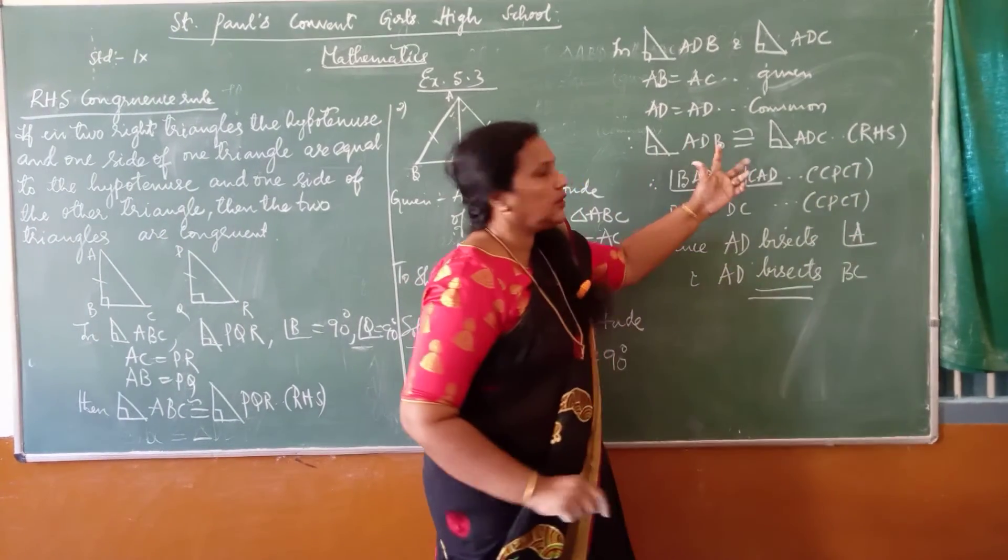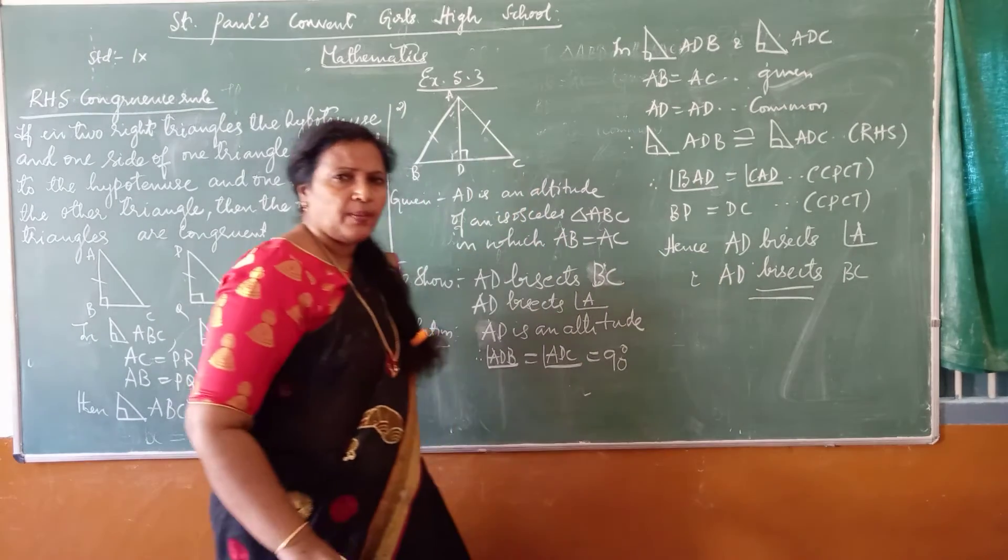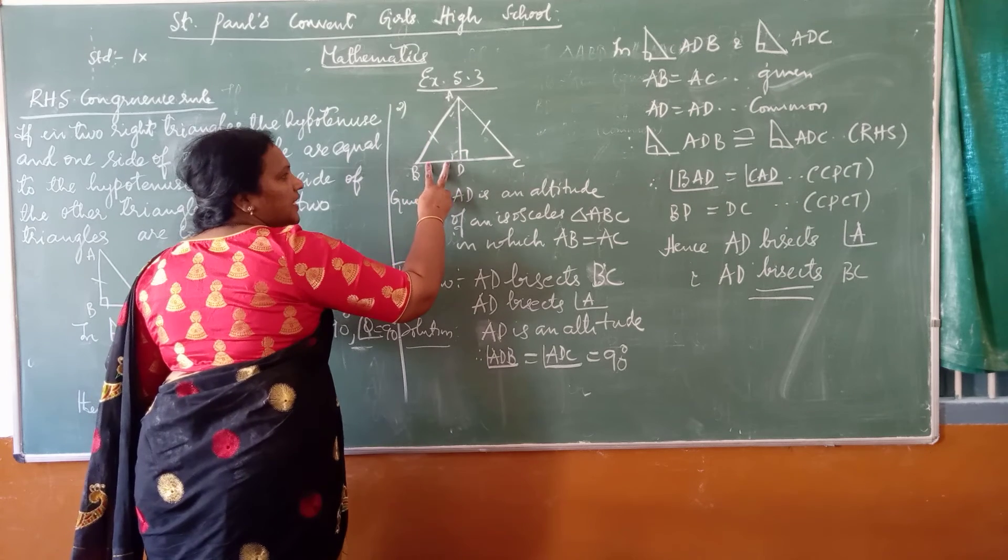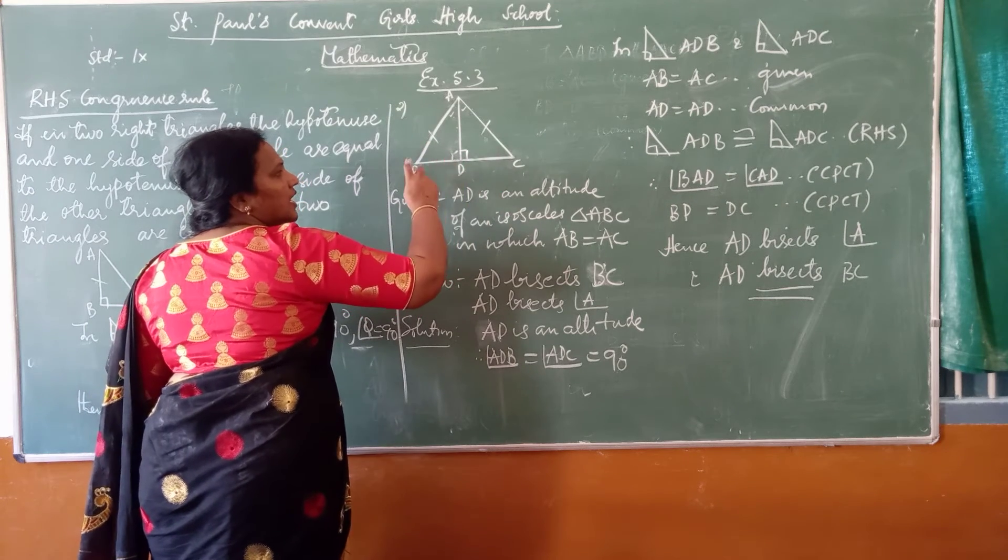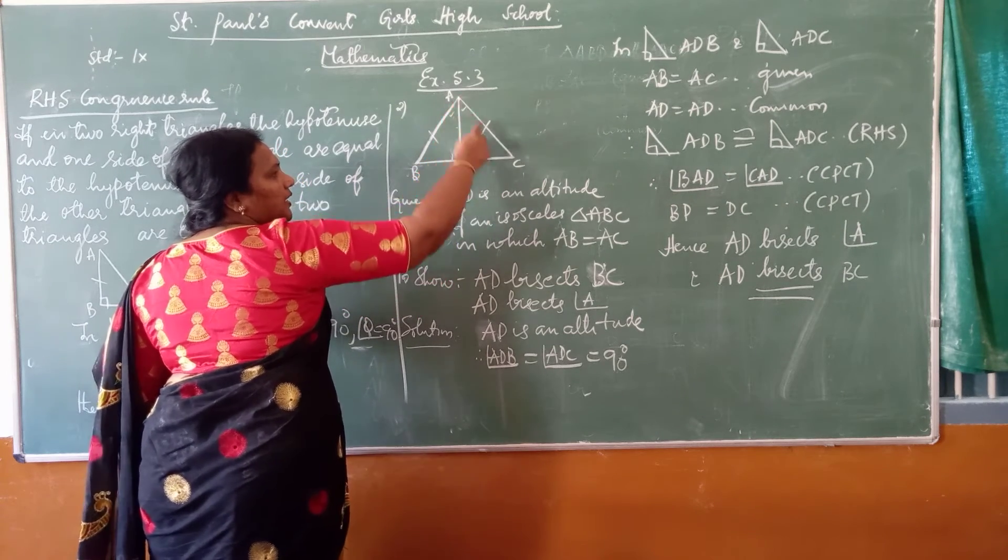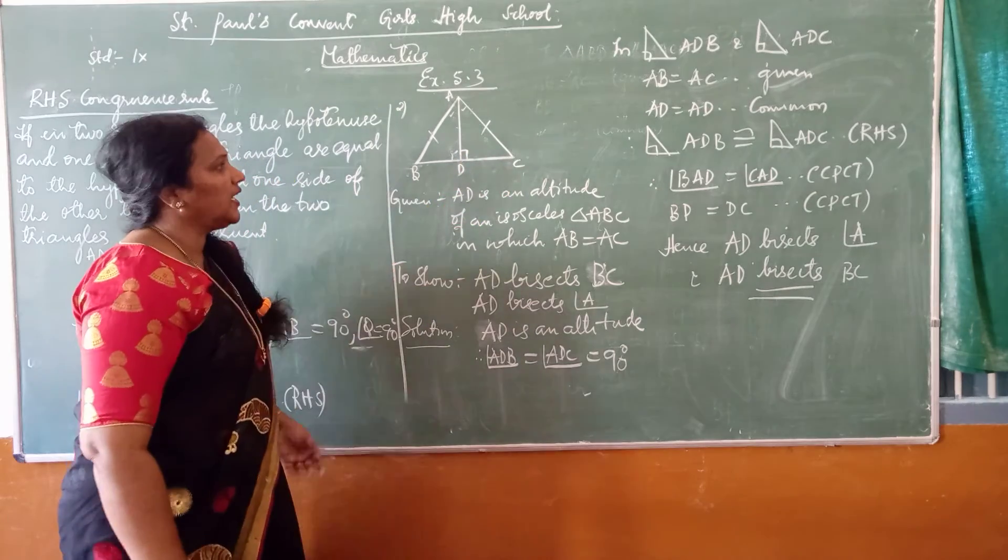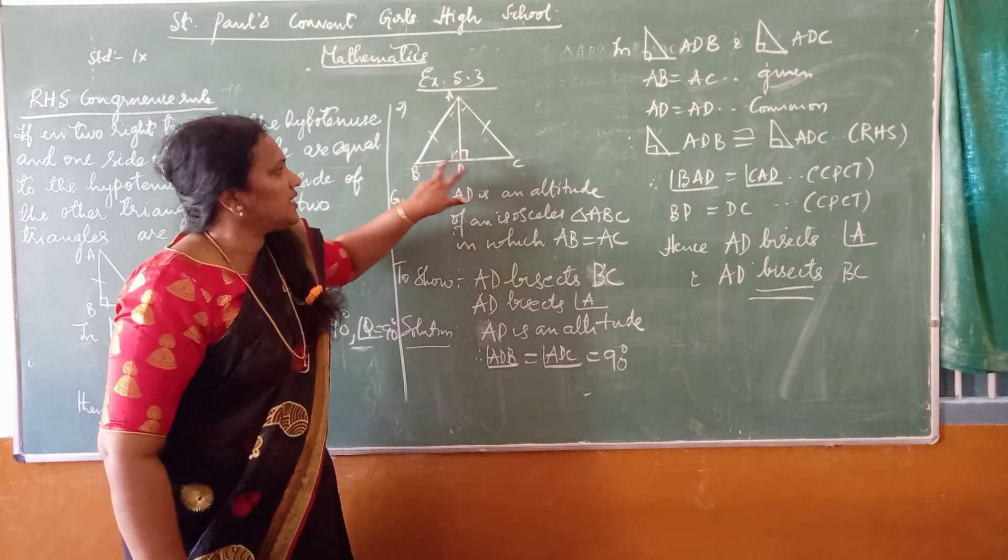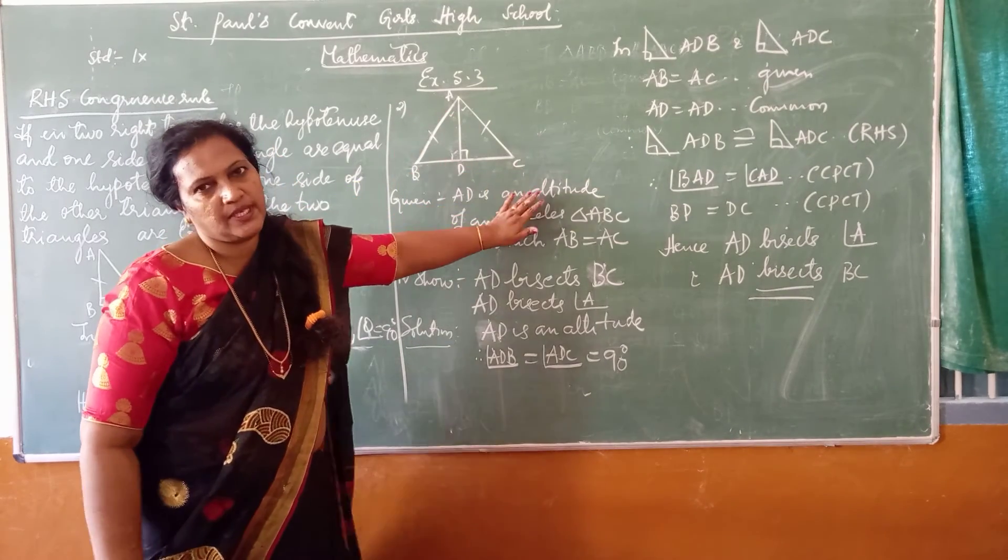Now, when you say the two triangles are congruent, corresponding parts will be equal. These two angles are equal and these parts sides. BD will be equal to DC. Angle BAD is equal to angle CAD. Therefore, I can say AD bisects angle A and since BD is equal to DC, AD even bisects BC.